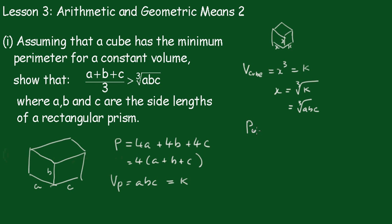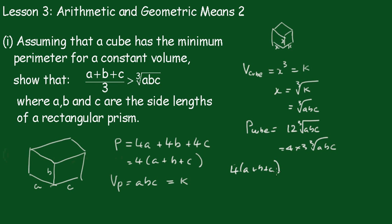The perimeter of the cube is going to be equal to — well, there's going to be a total of 12 of these side lengths — that's 12 times the cube root of abc, which is 4 times 3 times the cube root of abc. Now because we said the cube has the minimum perimeter, the perimeter of the prism, 4(a + b + c), must be greater than that of the cube. Dividing both sides by 4 and then by 3, we get the result that (a + b + c) / 3 is greater than the cube root of abc.